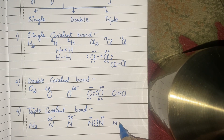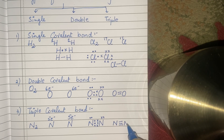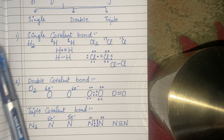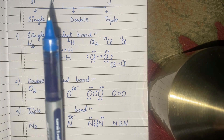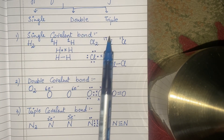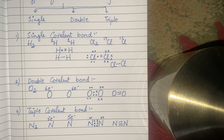So triple covalent bond को हम लोग तीन bonds से show करते हैं. These were the three different types of covalent bonding — one was single, the other one was double, and the third one was triple covalent bond.